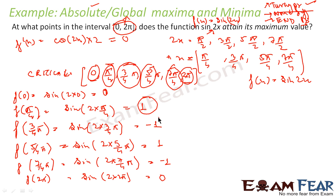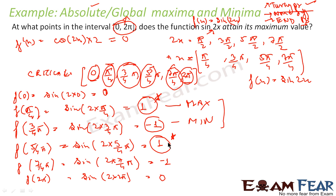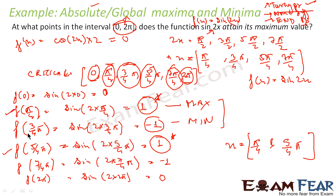The maximum value is 1 and the minimum value is -1. The points at which the function attains the maximum value are x = π/4 and x = 5π/4, since those are where f(x) = 1. The maximum value is 1.